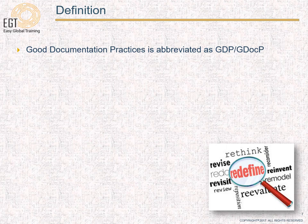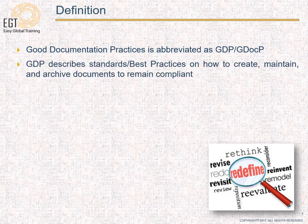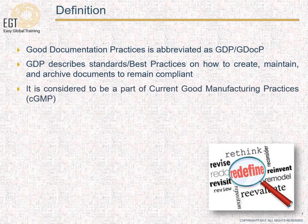Good documentation practice is commonly abbreviated as GDP. However, in order to differentiate it from good distribution practices, which is also abbreviated as GDP, it is recommended that you use GDocP to be clear. GDP is a term in the industry that describes standards and best practices on how to create, maintain, and archive documents to remain compliant. It is considered to be a part of current Good Manufacturing Practice, or CGMP. While it's not a law, regulatory bodies inspect against the GDP guidelines. Companies not following GDP guidelines may get comments, observations, 483s, and other types of penalties.